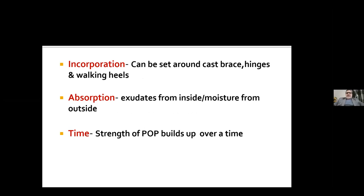For incorporating walking appliances: the plaster bandage in a wet stage is infinitely moldable and can be set around cast braces, hinges, and walking heels. For maximum strength, apply a few layers first, let it set and dry a bit, then apply walking appliances with a fresh layer of plaster bandage. Applying appliances on a wet cast will indent it, leading to pressure sores. Excess exudates from inside and moisture from outside will weaken the cast. The strength of POP builds up over time — it takes around 48 to 72 hours to completely dry. Do not allow the patient to weight-bear before that time.